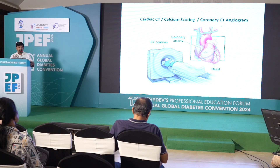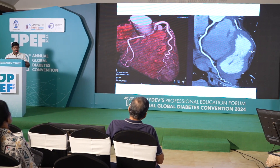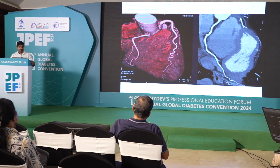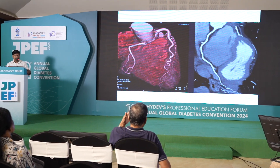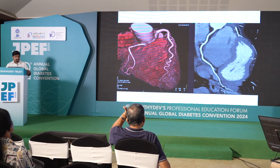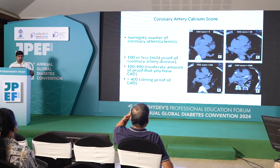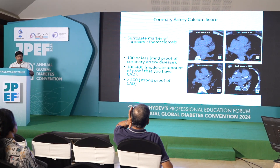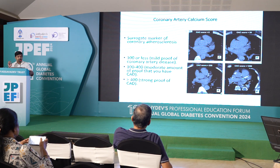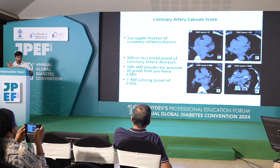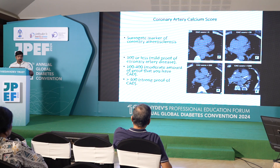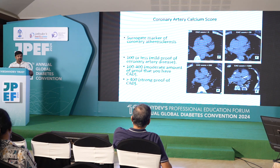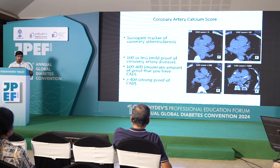CT scans are increasingly being used to screen and diagnose either for calcium scoring or to diagnose overt disease. You get very beautiful high-resolution images of coronary arteries just with a CT. It is just a five-minute test, but it involves contrast and radiation. Coronary calcium scores — we know atherosclerosis is an inflammatory process and calcium goes with it. Calcium is a surrogate marker of atherosclerosis. The calcium score can be anywhere between 100, 100 to 400, or more than that.